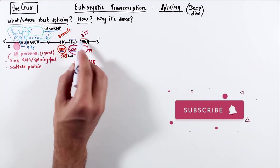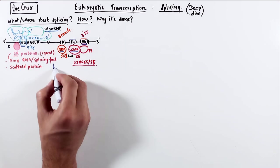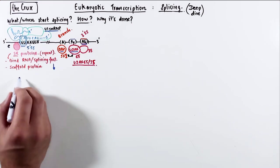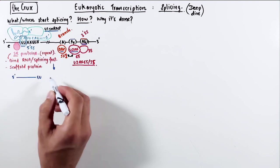the affinity of the other one increases drastically. So this is the recognition stage, where GU is bound by the U1 snRNP, branch point by SF1, 3' splice site by the U2AF complex.